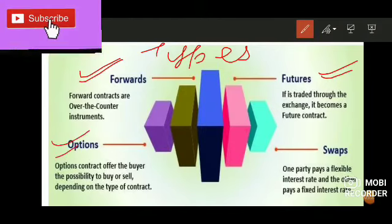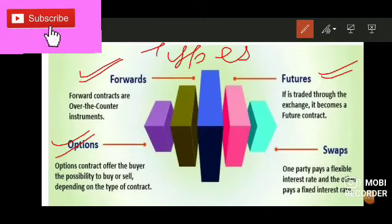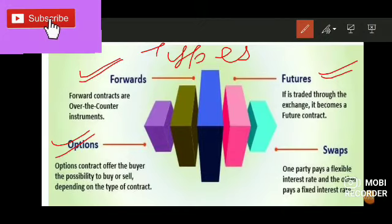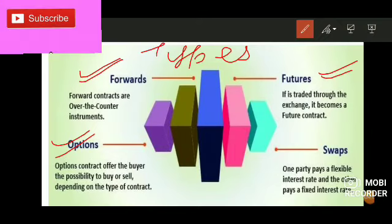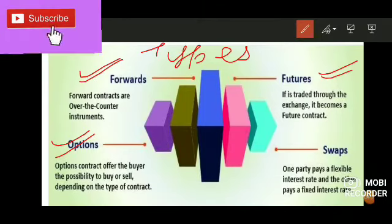Next come options. In options, you have the option to buy or not to buy, or to sell or not to sell. For example, if I want to invest in a commodity, I tell the other party that if it is available at a rate lower than the market rate, I will purchase from you; otherwise I will buy from the market. One party has the right while the other has only the obligation to perform. Buying is referred to as a 'call' and selling as a 'put'.